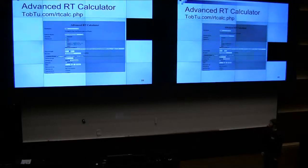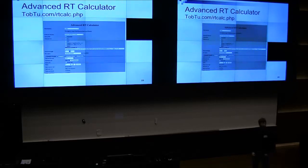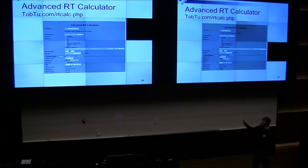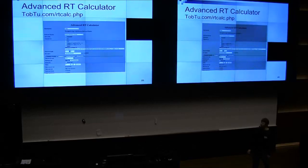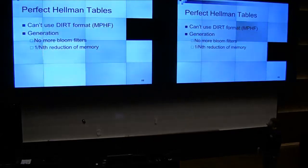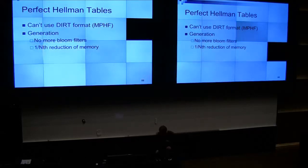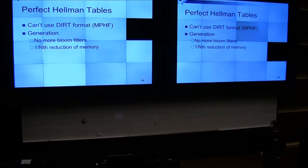I have a rainbow table calculator — basically, you put in your key space, success rate, perfect or imperfect, number of tables, and other settings, and it will tell you the details. I actually use this for the stats comparing imperfect and perfect with those chain lengths and file footprints.